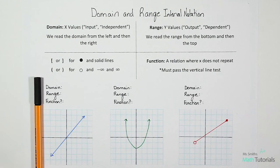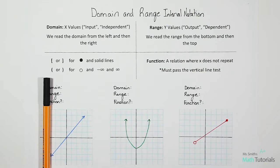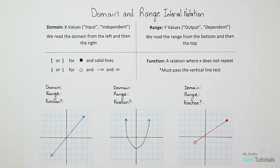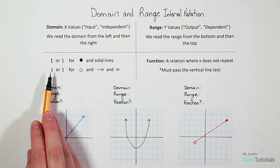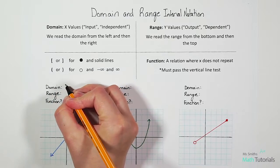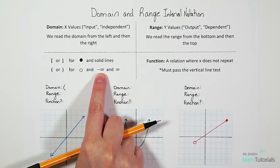When we read from the left, we take our pen and pull in, and we ask ourselves: what's the first place that we hit? Some students would say we're hitting at negative three. But here's the thing — that's where our blue arrow looks like it's at a stopping point. But it's an arrow, and arrows keep going on forever. It doesn't stop at negative three; it's going to keep going on and on to infinity. So we're going to use a parenthesis, and because it's on the left, it's going to be negative infinity.